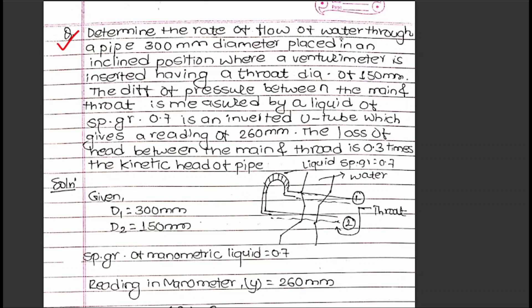Determine the rate of flow of water through a pipe 300 mm diameter placed in an inclined position where a venturimeter is inserted having a throat diameter of 150 mm. The difference of pressure between the main and throat is measured by a liquid of specific gravity 0.7 in an inverted U-tube which gives a reading of 260 mm.